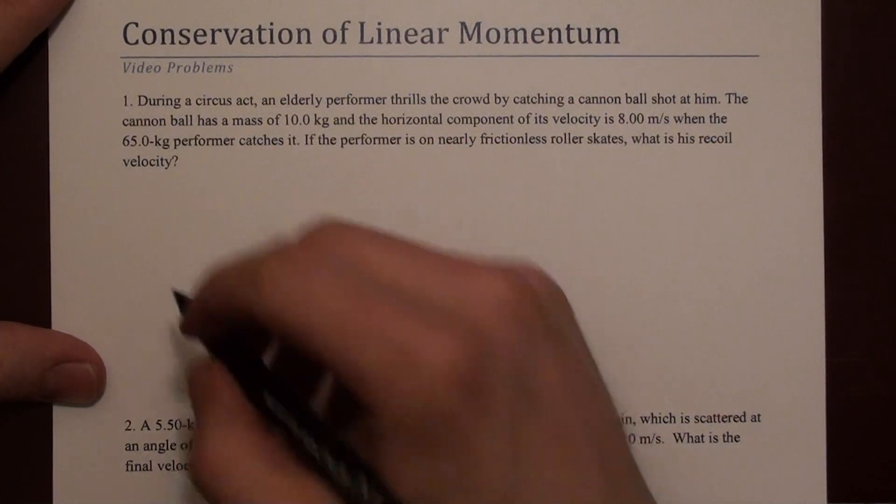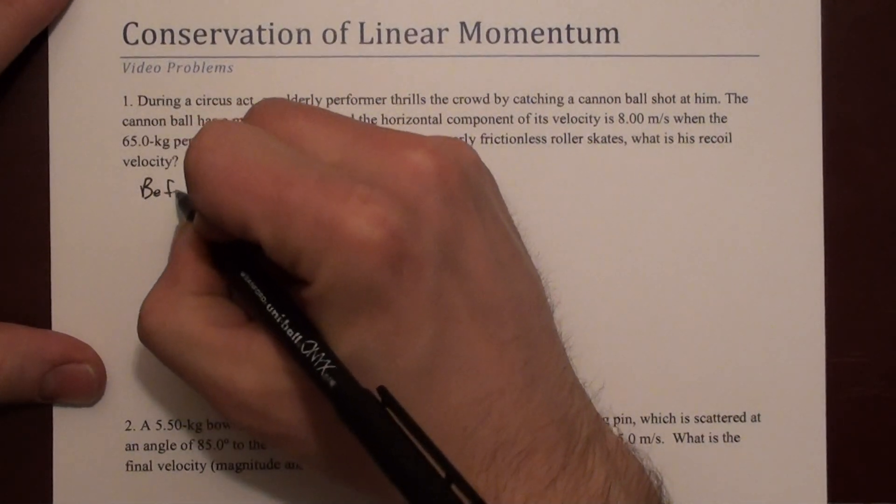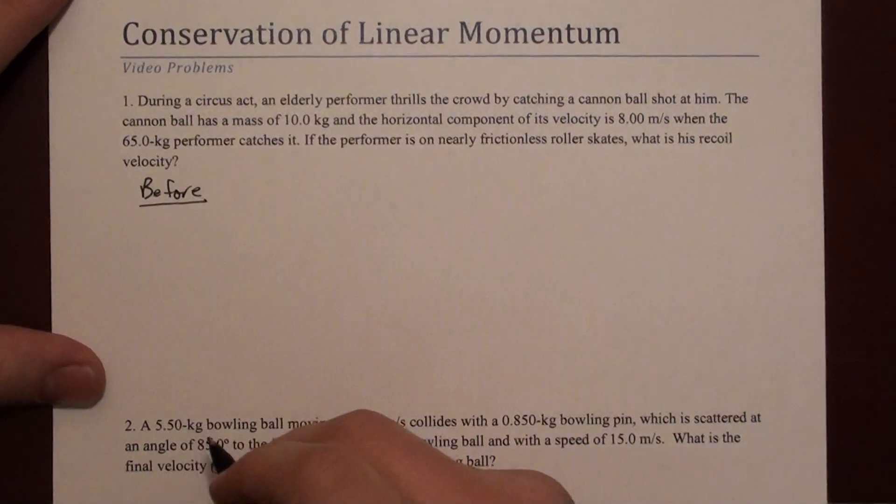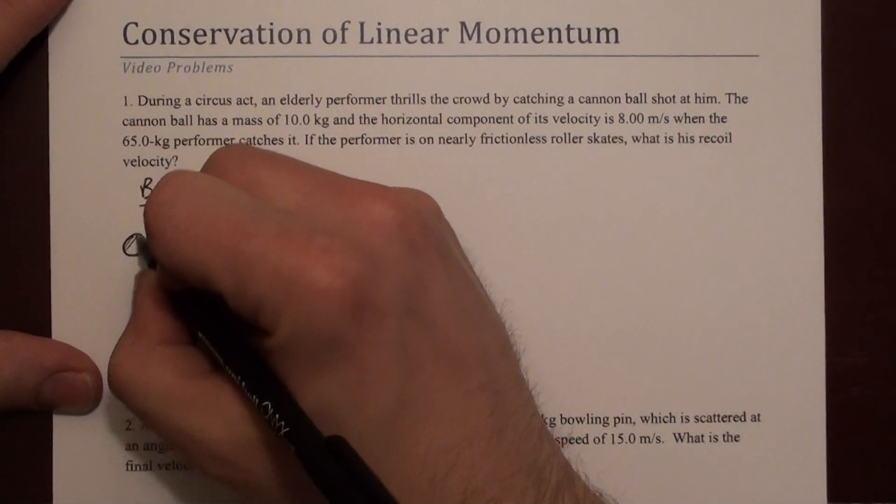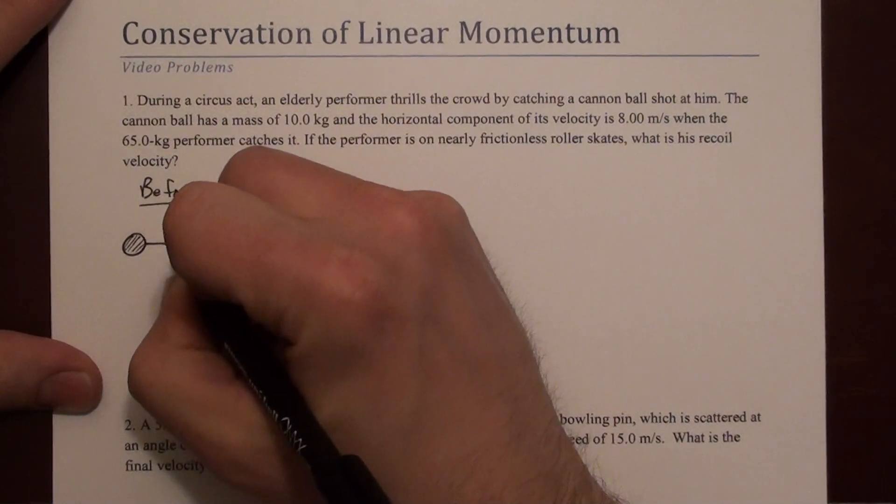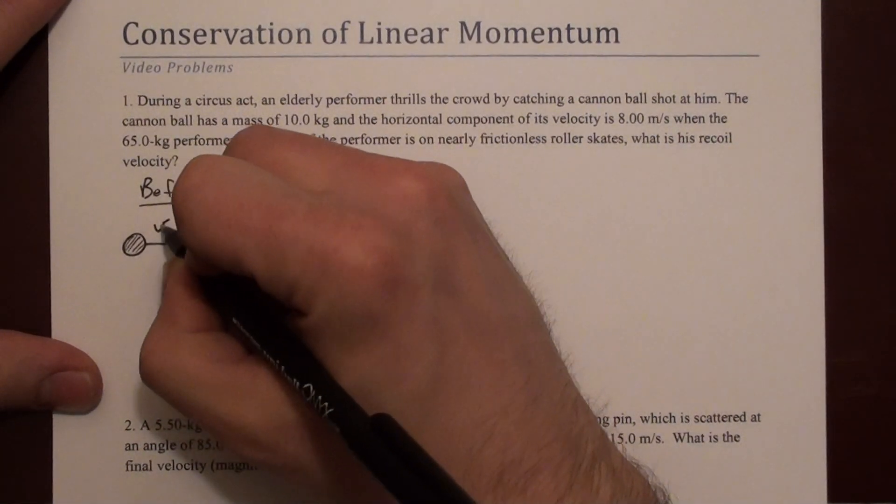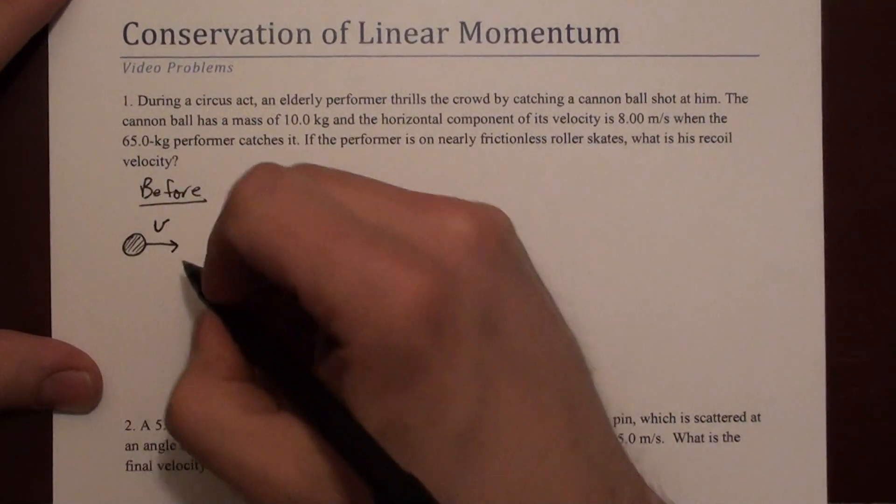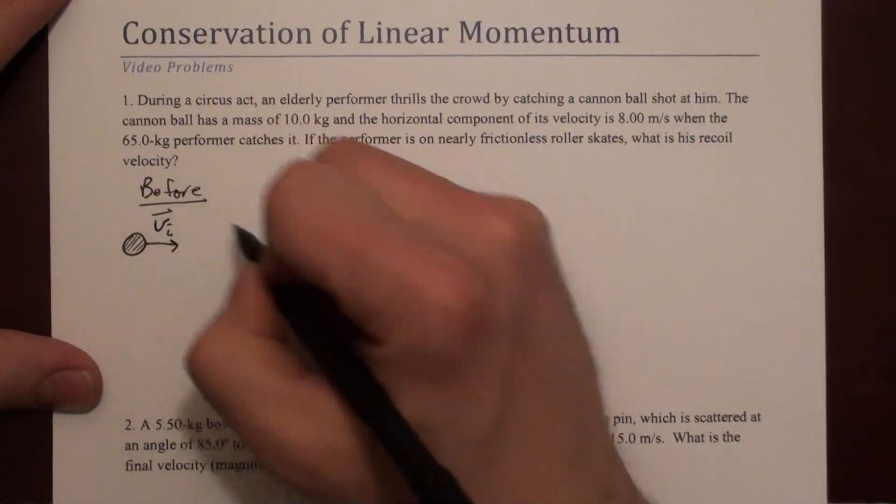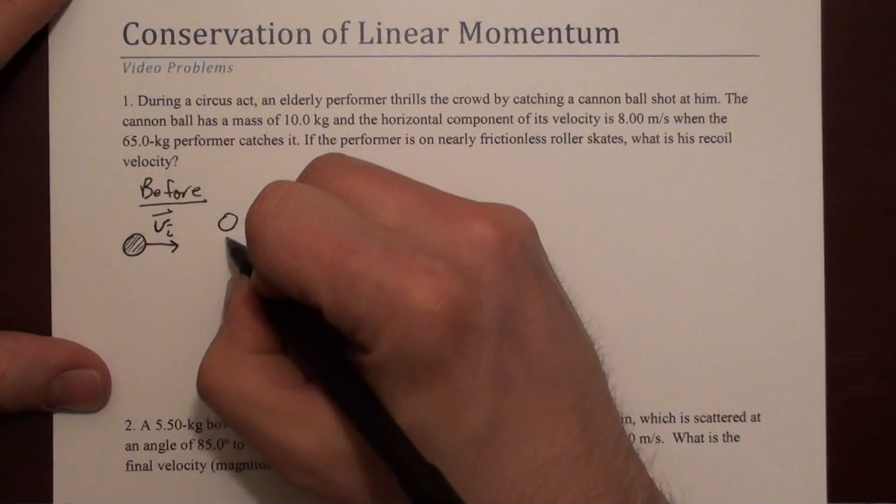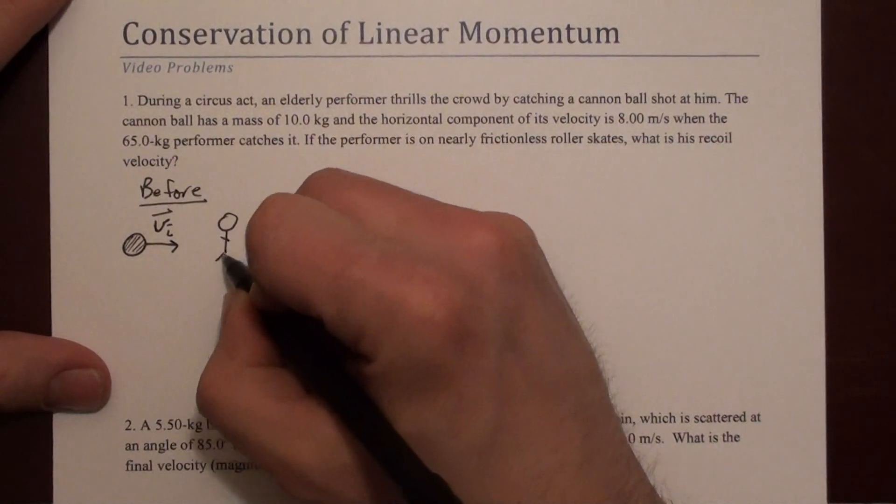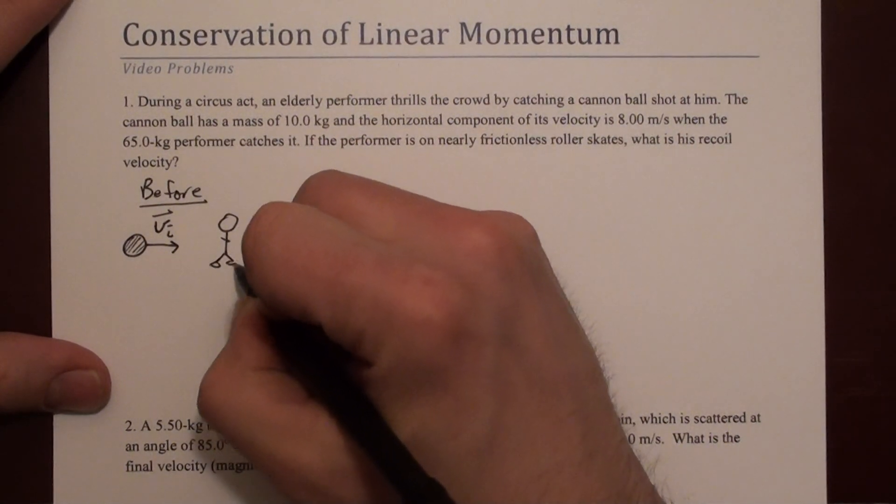We can draw a before and after for this. Here's our before. I will draw a cannonball traveling at v initial, and we'll draw our performer here on roller skates.